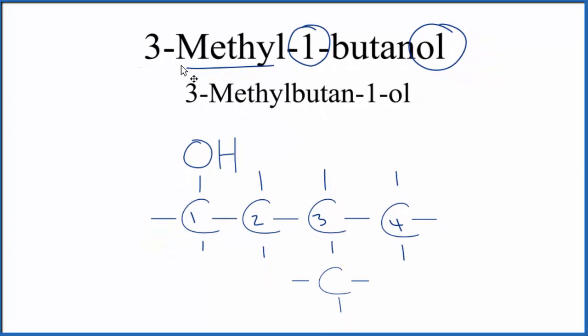So that's it. That's the structure for 3-methyl-1-butanol. We have our alcohol on the first carbon, and then on the third carbon here, we have our methyl group.